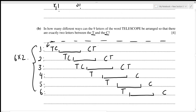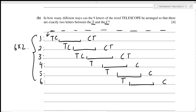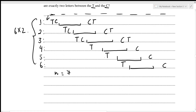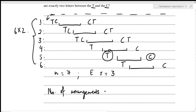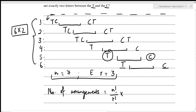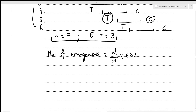For the remaining 7 letters (with E repeating 3 times), the number of arrangements is 7!/3!. Multiplying by the 12 arrangements of T and C gives: 6×2×(7!/3!) = 10,080. This concludes the fourth question.